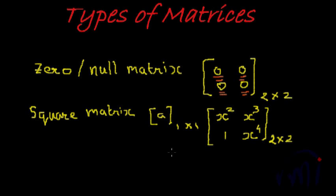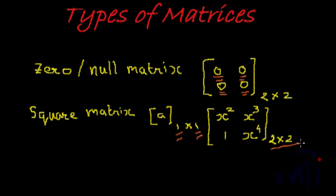Then comes the square matrix. A square matrix is defined as one where the number of rows and number of columns are equal. A one-by-one matrix is also a square matrix, as is a two-by-two, a three-by-three, or an m-by-m matrix. A key point to remember is that a singleton matrix is also a square matrix.